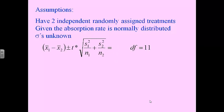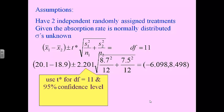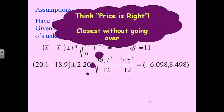We'll do the formula and calculations. Our degree of freedom is 11 because both sample sizes were 12, and 12 minus 1 is 11 — we take the smaller, which is 11. So we subtract x̄₁ minus x̄₂, take the t* value from our calculator or the back of the book, plug in 8.7 and 7.5, do a little plus-minus calculator work, and there's our interval.